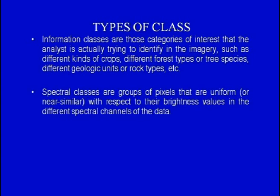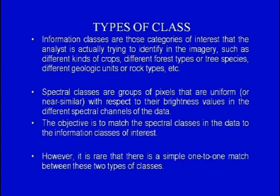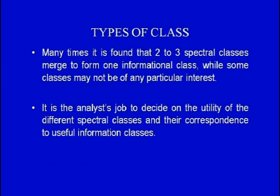In spectral classes, the analyst tries to identify groups of pixels that are uniform or near-similar with respect to their brightness values in the different spectral channels of the data. The objective is to match the spectral classes in the data to the information classes of interest. However, it is rare that there is a one-to-one match. Many times, 2 to 3 spectral classes merge to form one information class, and it is the analyst's job to decide on the utility of different spectral classes.